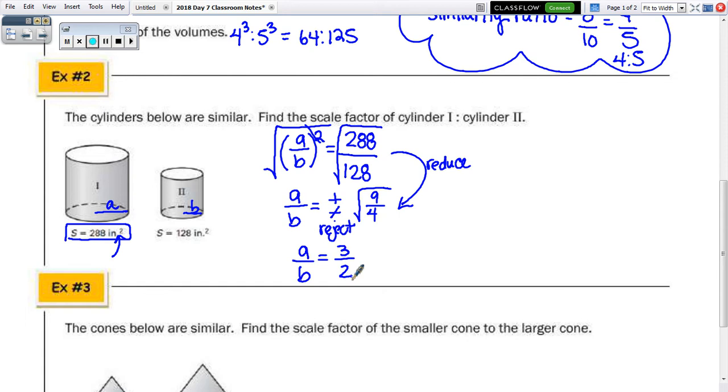So, A over B is equal to 3 over 2. So, there's our similarity ratio. So, our scale factor, again, and going from cylinder 1 to cylinder 2, it gets smaller. So, our scale factor should be less than 1. And it is. The reciprocal of 3 halves is 2 thirds.